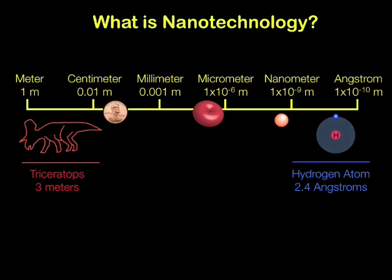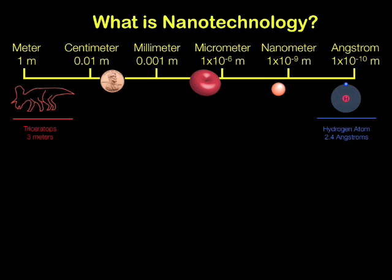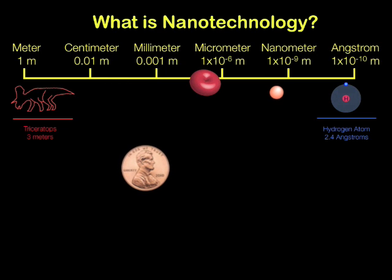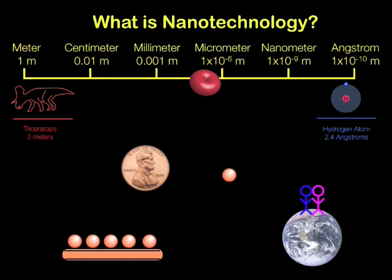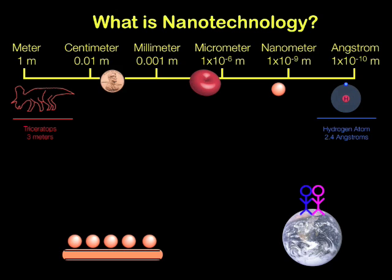It's probably easier to think about it this way. If you took a penny and laid it down on its side and covered the surface with nanoparticles, you would have more nanoparticles on the face of the penny than all the people on Earth. So, as you can imagine, nanoparticles are very small indeed.